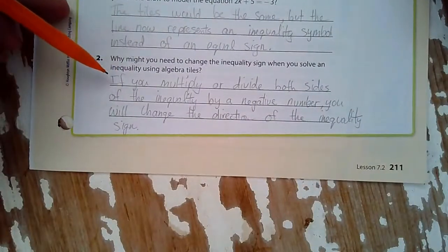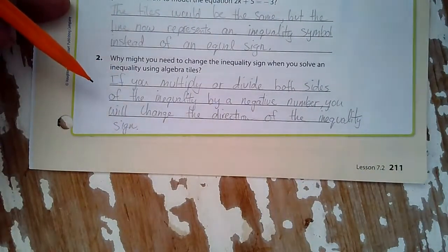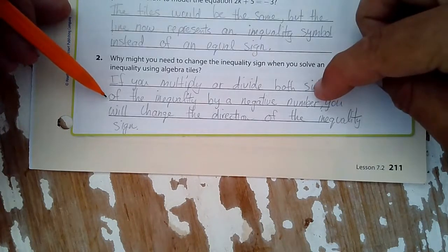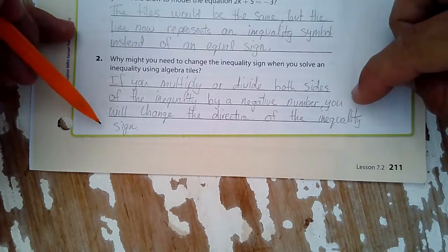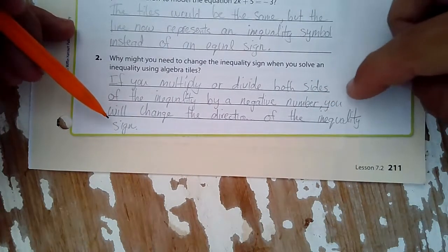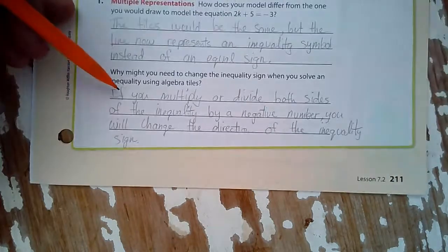How might you need to change the inequality sign when you solve an inequality using algebra tiles? If you multiply or divide both sides of the inequality by a negative number, you will change the direction of the inequality sign. And we learned that in the last lesson, 7.1. That's a big part of that.